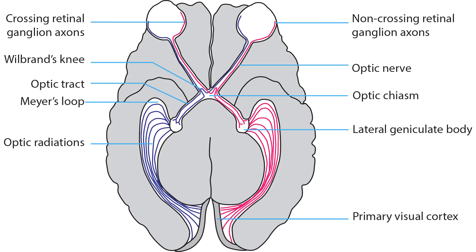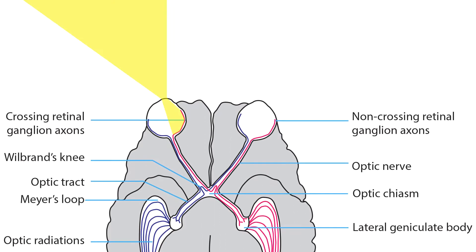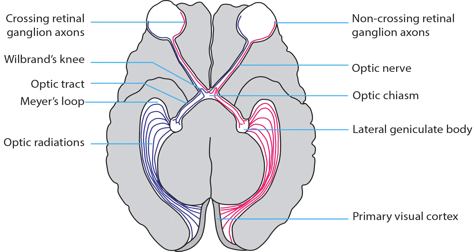Here is a key fact about how the eyes receive visual information. The nasal retina in each eye sees objects in the corresponding temporal hemifield. The temporal retina in each eye sees objects in the corresponding nasal hemifield. Within the optic chiasm, the axons coming from temporal retina stay on the same side and enter the ipsilateral optic tract, while the axons coming from nasal retina cross to enter the contralateral optic tract.